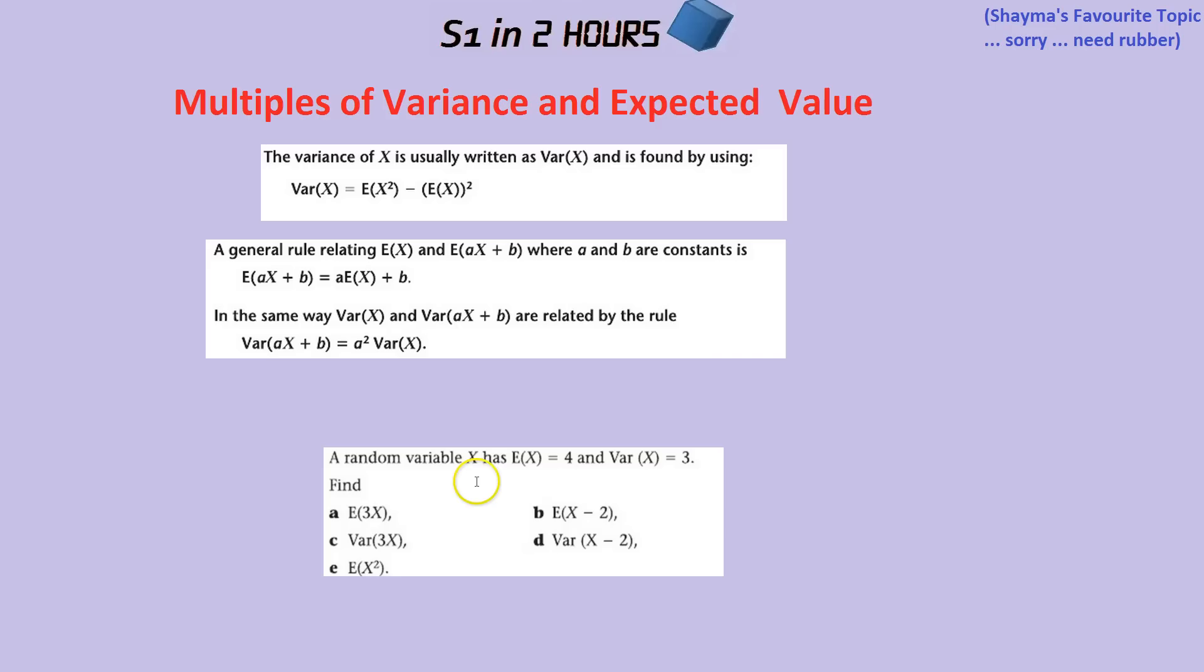A random variable X has expected value of 4 and variance of 3. Find the expected value of 3X. Well with expected value it's fairly simple. If the x's are times by 3, the answers are times by 3. 4 times 3 is 12. What about X minus 2? Again with expected value it's very simple, so you just take away 2 from the expected value. 4 take away 2 is 2.